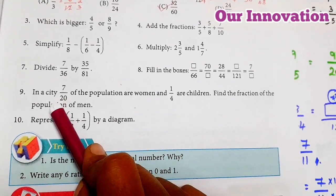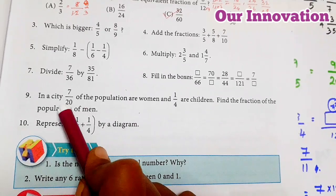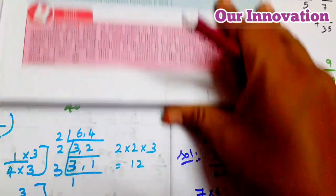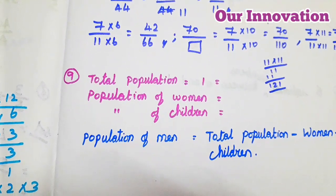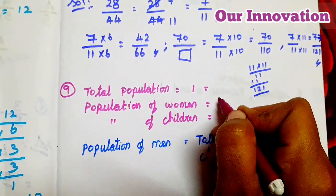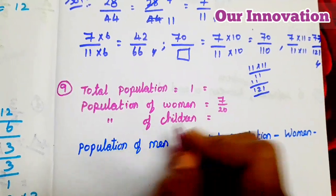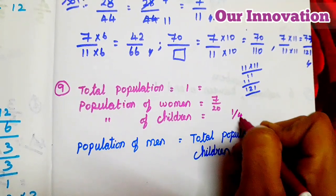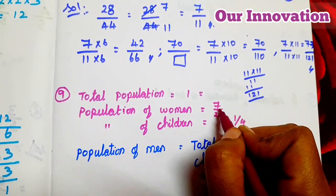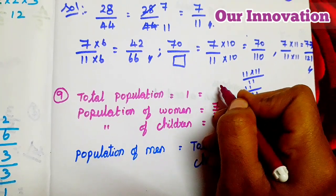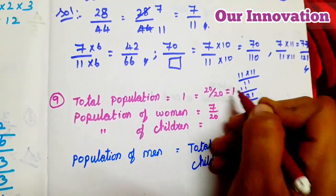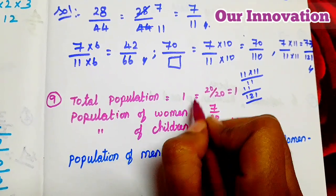So what do we find? 7/20. City population of women: 7/20; children: 1/4. Find the population of men. First step: find the total population. Population of women is 7/20. Next, population of children is 1/4. The total population is 20/20.